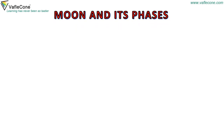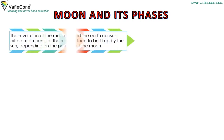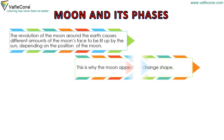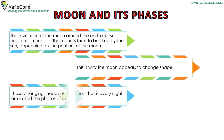Moon and its phases. The revolution of the moon around the earth causes different amounts of the moon's face to be lit up by the sun, depending on the position of the moon. That is why the moon appears to change shape. These changing shapes of the moon that we see every night are called the phases of the moon.